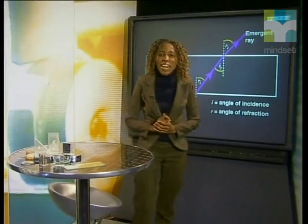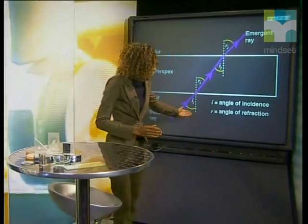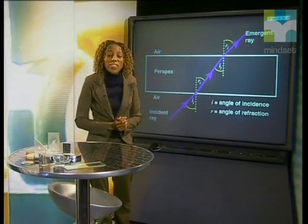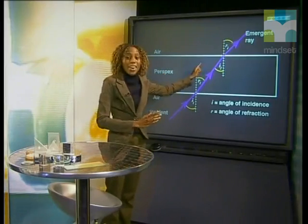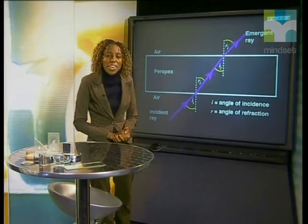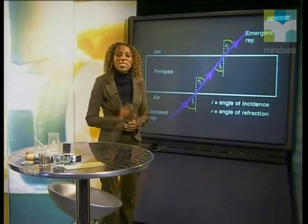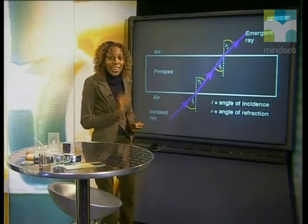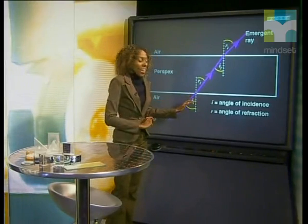When we talk about optical density, we are talking about how quickly or slowly light moves through a substance or medium. Air has a low optical density because light can move through it quickly, whereas something like plastic has a high optical density because light travels through it slowly. When light moves from a low optical density to a high optical density, the light is refracted closer to the normal because the light ray is slowing down, so the angle of incidence is larger than the angle of refraction.